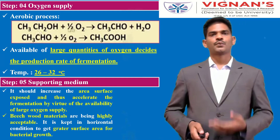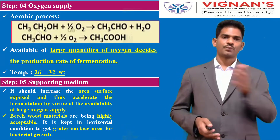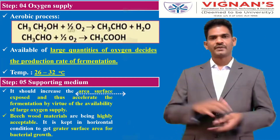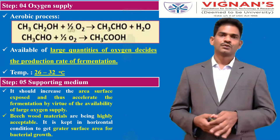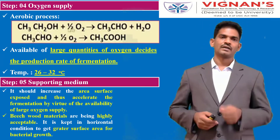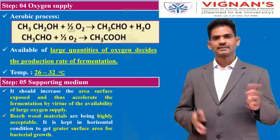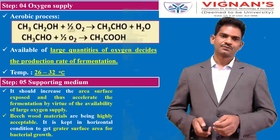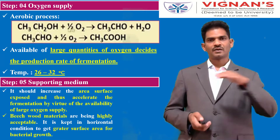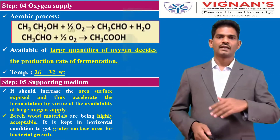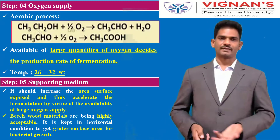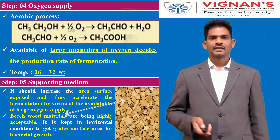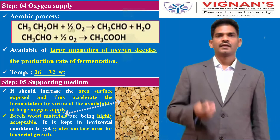Step five is the supporting medium. We need to add supporting materials to enhance the surface area, which is essential to accelerate the growth of inoculated cells. Beechwood materials are commonly used as the supporting medium because they have a perforated surface on which a biofilm of Acetobacter can be coated for producing acetic acid.